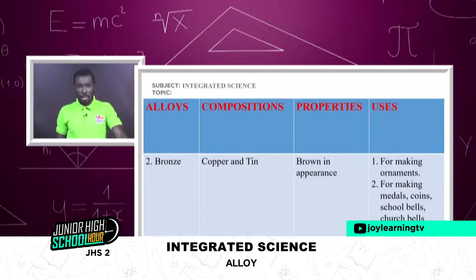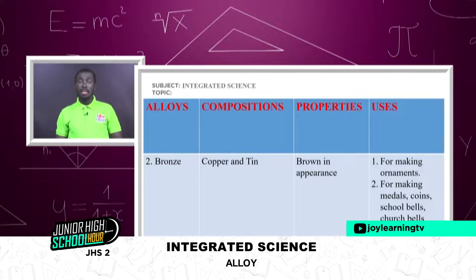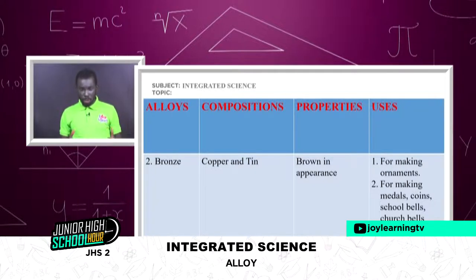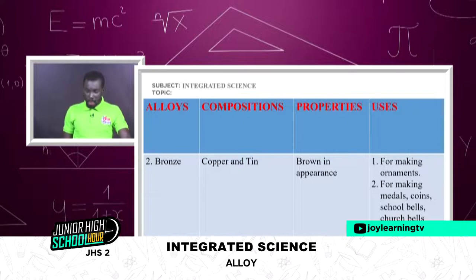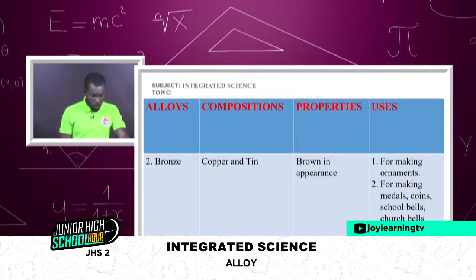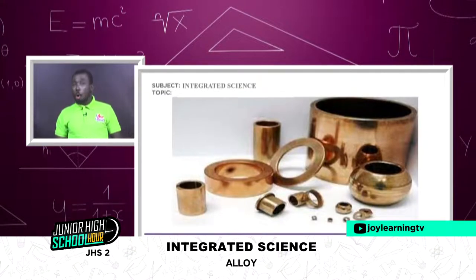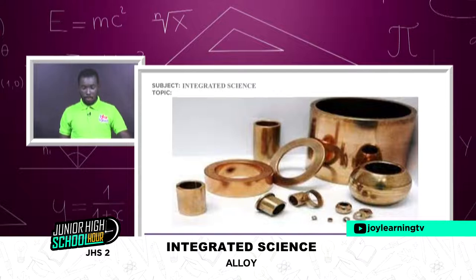Number two is bronze. The composition of bronze includes copper and tin. A key property of bronze is that it is brownish in color or appearance. Bronze is used for making ornaments, medals, coins, school bells, and church bells, among other things. This is how a bronze ornament looks, and these were very common in the ancient Roman Empire.